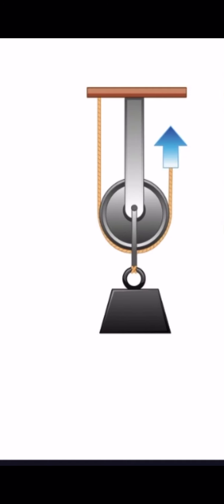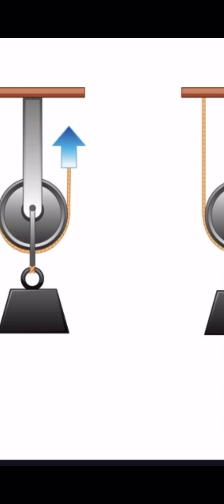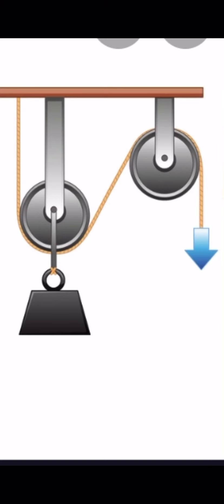The second kind is a movable pulley. From its name, the grooved wheel will move — it will start to move. One end of the rope will be fixed and does not move. The third kind is block and tackle, which is made of more than one pulley.